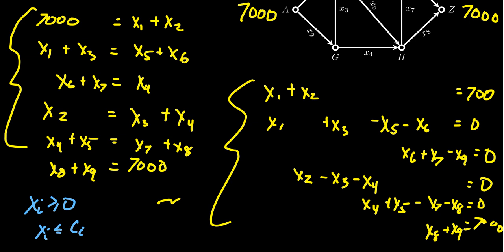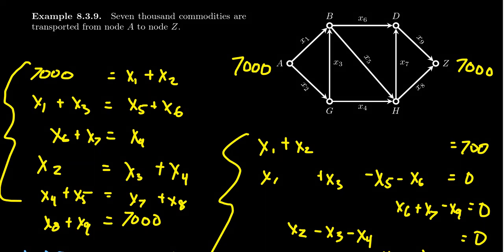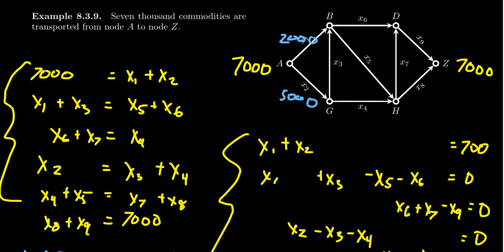Maybe in the original picture, I said 1,000 and 6,000, but maybe the capacity for X2 is actually 5,000. So then you can send 2,000 here maybe, or something like that. There could be some extra constraints. Now, we're not going to worry so much about that.